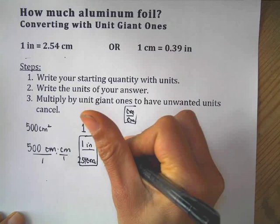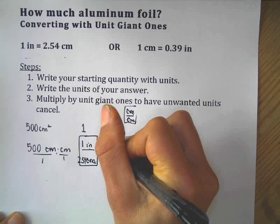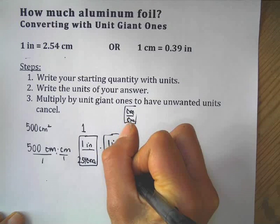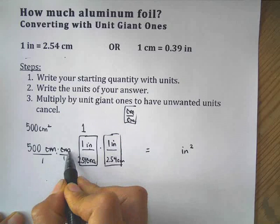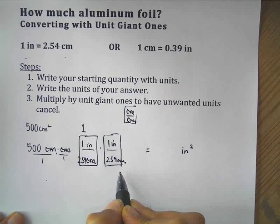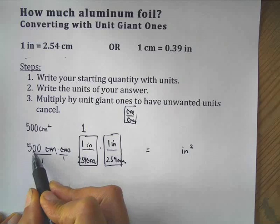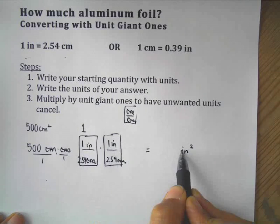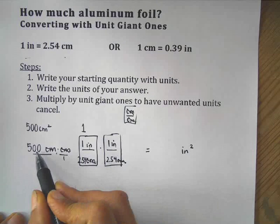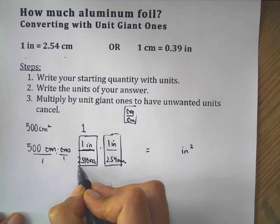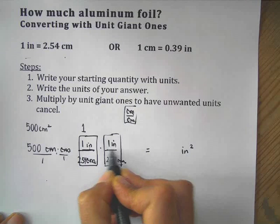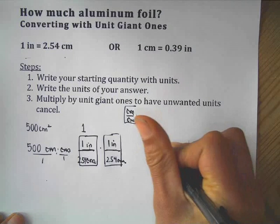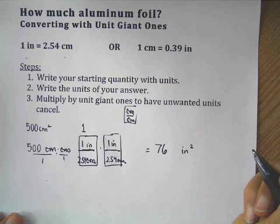Once again, one inch is the same as 2.54 centimeters. I have a centimeter in the numerator, a centimeter in the denominator. That cancels out. And now I have 500 inches times inches, which gives me inches squared. But I have to deal with these numbers. So if I take 500 divided by 2.54 divided by 2.54, I get my answer, which is about 76 inches squared.